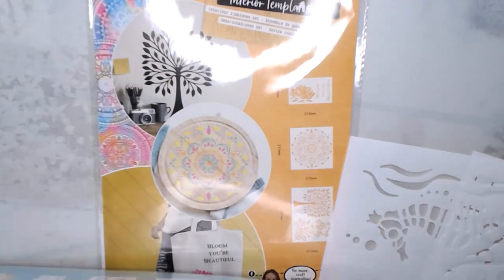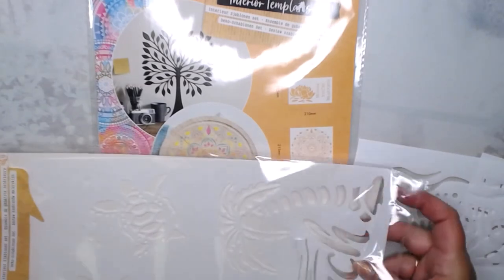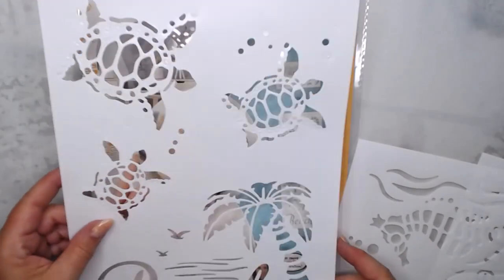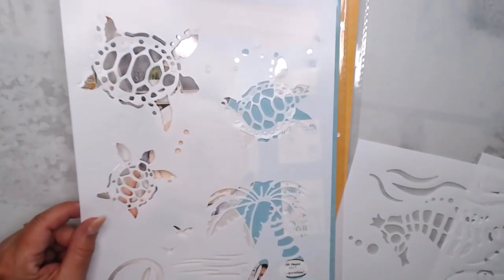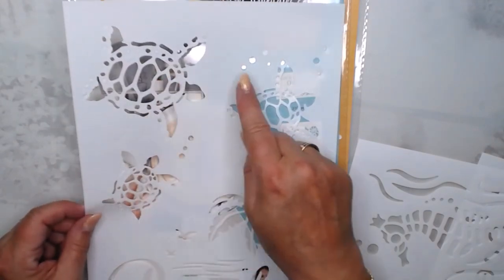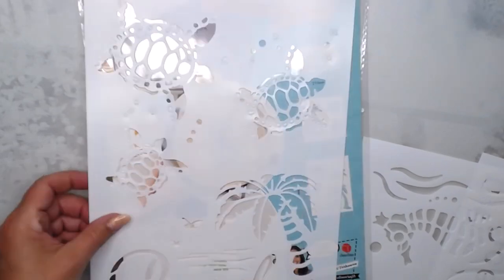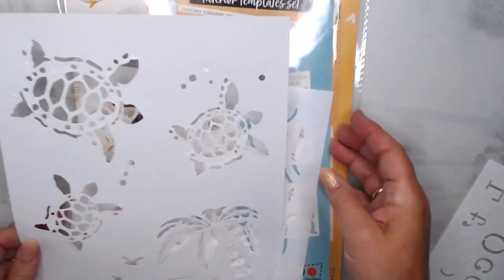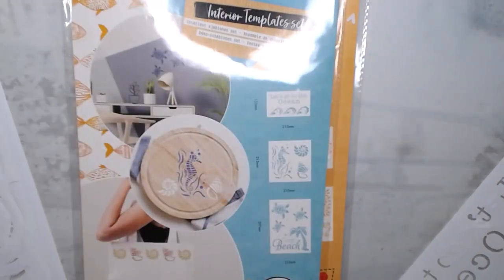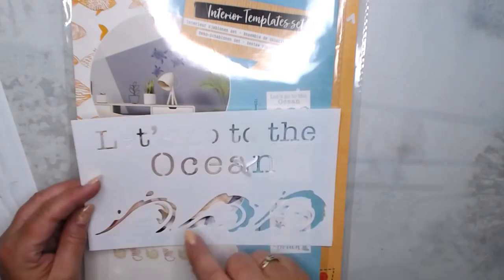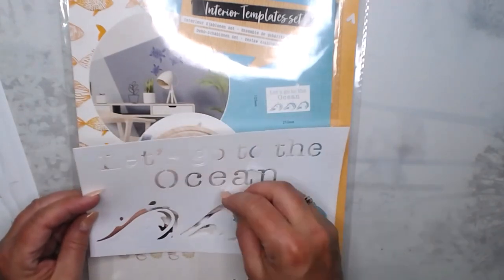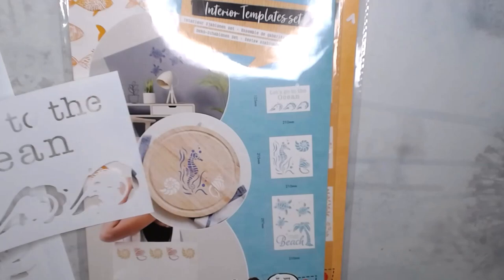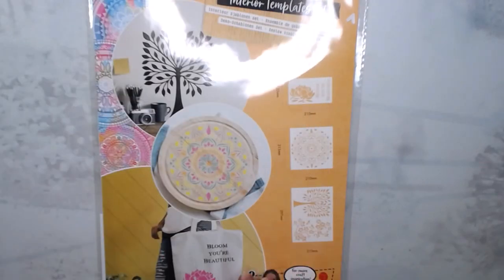This one I really like. It has beach on here and a palm tree. Birds, bubbles, and turtles. I really like the turtles. And then on the smaller one it has a seahorse and some shells. And the last one, let's go to the ocean and some waves. So yeah, also nice.